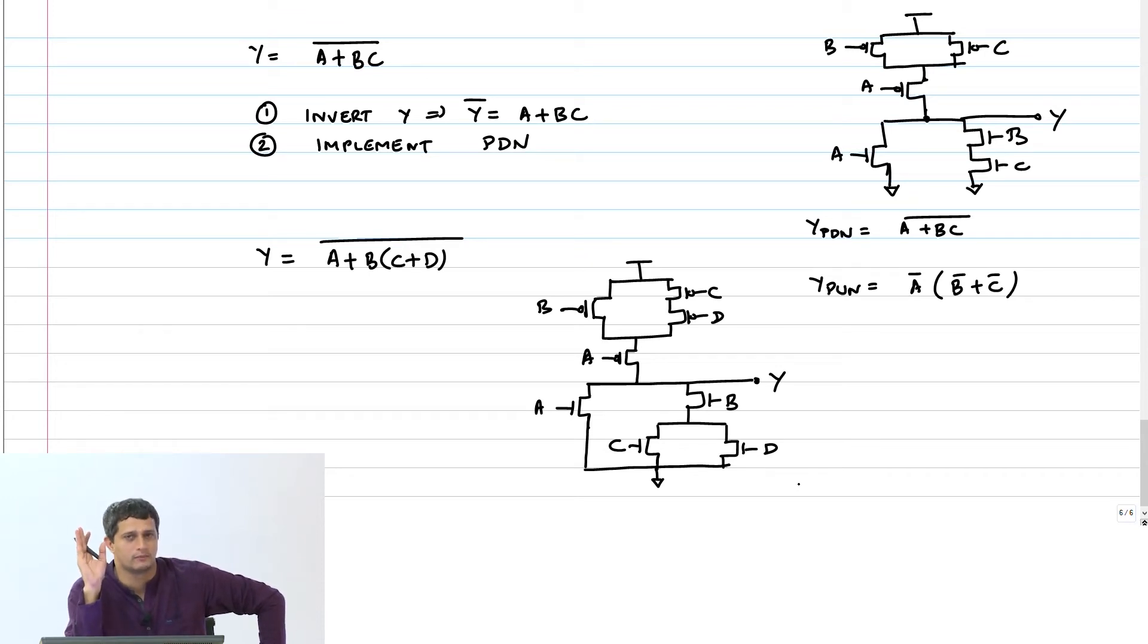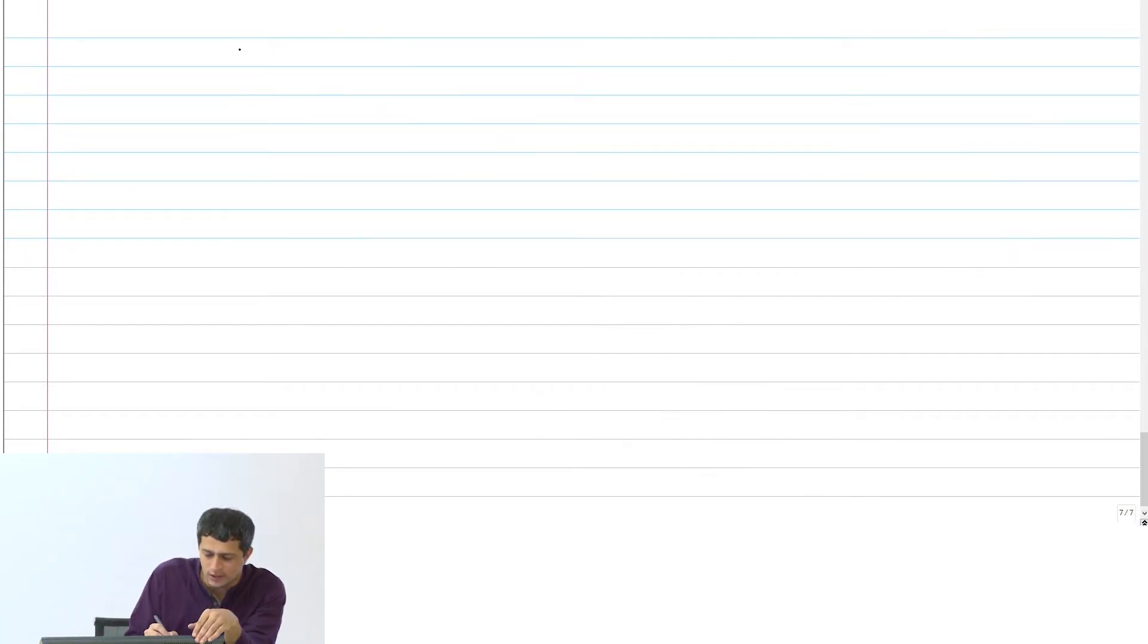So now let us move on to the question of sizing. We said that when we had a CMOS inverter, we said that the W, for example this would be 4 lambda by 2 lambda W by L, this would be 8 lambda by 2 lambda W by L.